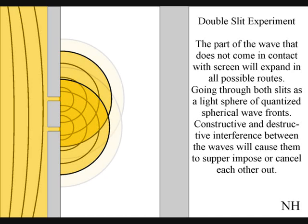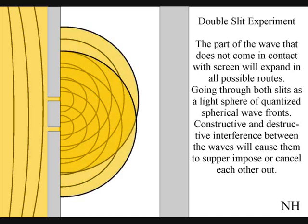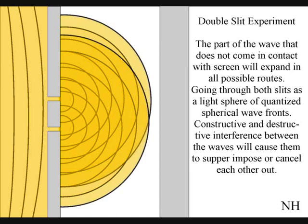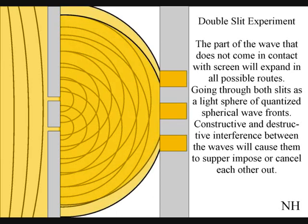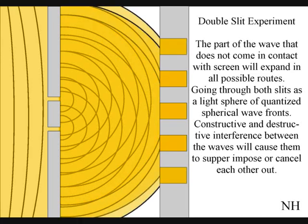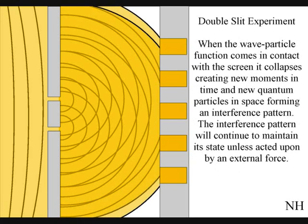Constructive and destructive interference between the waves will cause them to superimpose or cancel each other out. When this wave particle function comes in contact with the screen, it will collapse, creating moments of time and quantum particles in the shape of an interference pattern.